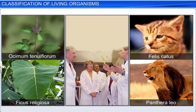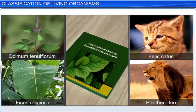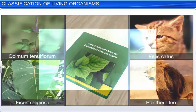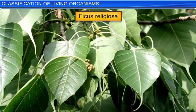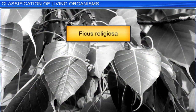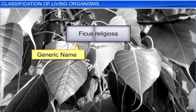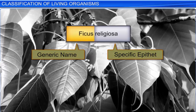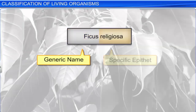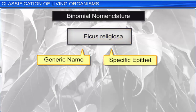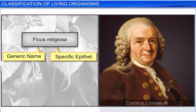Scientific names help avoid ambiguity, as each organism has just one name. Certain universal rules are followed while providing a scientific name to a known organism. For example, the scientific name for the sacred fig, commonly known as the people tree in India, is Ficus religiosa. The scientific name has two components: the generic name and the specific epithet. Ficus represents the genus or the generic name, while religiosa denotes the specific epithet. This system of representing a name with two components is called Binomial Nomenclature, and was devised by Carolus Linnaeus, also known as the father of modern taxonomy.